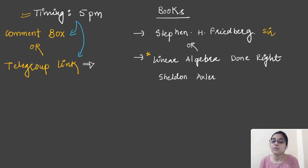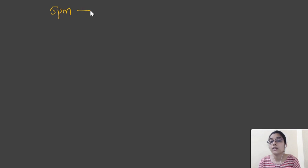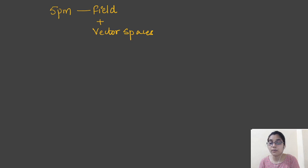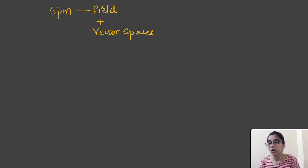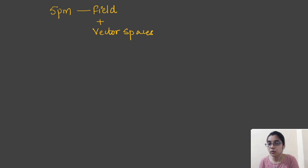So that's all the information about this course — syllabus, timing, books, and how we will proceed with theory plus practice together. All the best to all of you for this new course. From tomorrow at 5 PM we will start with our lectures, and most probably tomorrow we will cover field plus vector spaces both. The lecture duration will be around one and a half hours since 50-55 minutes is not sufficient. Hopefully all your questions are answered — if not, drop them in the comment box and I'll try to reply before tomorrow's lecture.